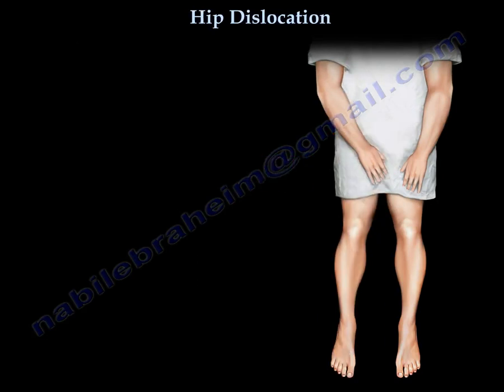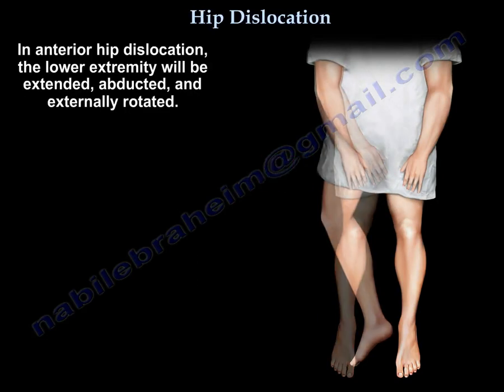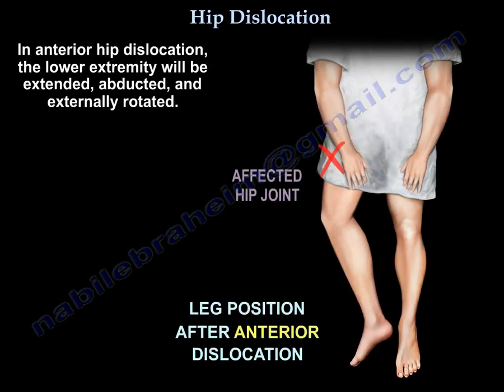In anterior hip dislocation, the lower extremity will be extended, abducted, and externally rotated. You can see the position of the lower extremity after anterior hip dislocation.